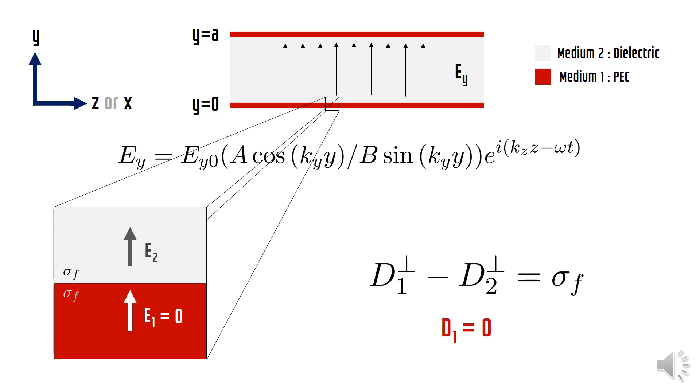Since D1 is zero, D2 has to be non-zero at the interface for surface charge to exist. This means that Ey should be non-zero at the interface at y equals zero. Similar to the previous calculations, the expression for Ey comes out to be like this.